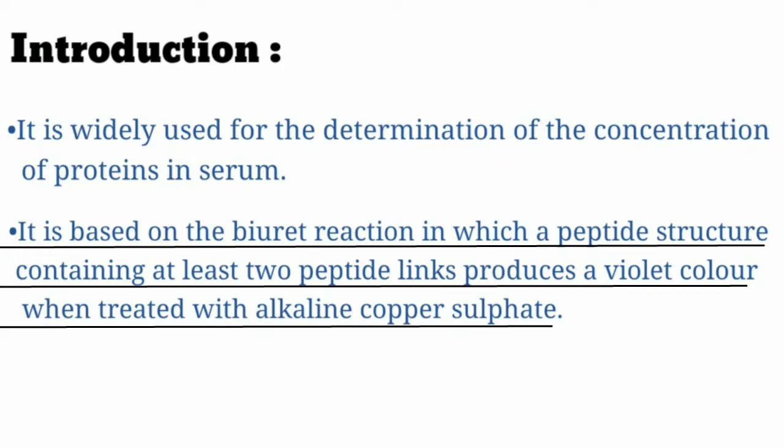The Biuret reaction states that any peptide structure contains at least two peptide links or bonds. Any peptide structure has two peptide links — and since proteins are made up of peptide bonds, they also qualify. When we treat this with alkaline copper sulphate, it forms a violet color. That is the Biuret reaction.